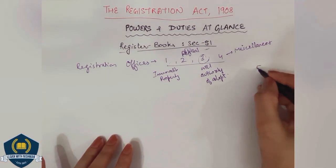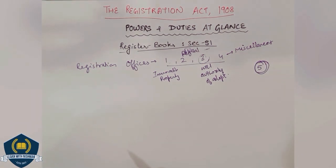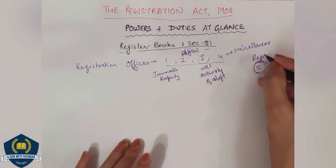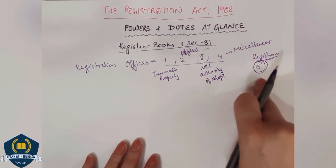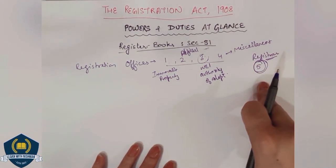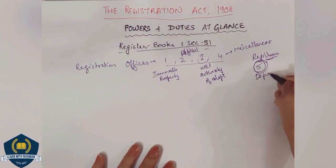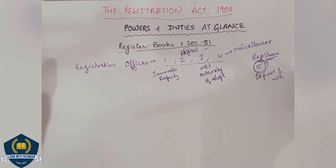Now book number 5 is remaining. Book number 5 is found in the office of registrars — not in general registration offices, but specifically in the registrar's office. What is important about it is that it contains the register of deposit of wills. Deposit of wills are found only in book number 5.